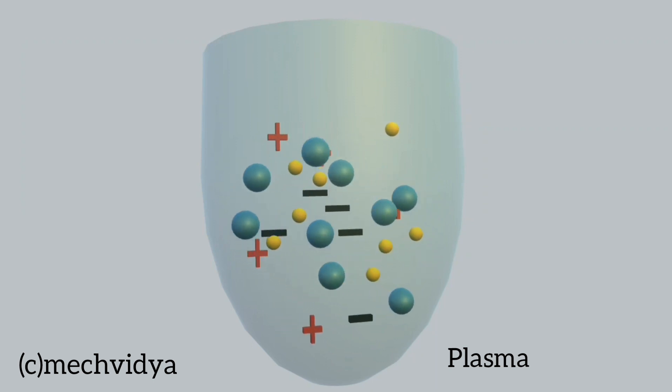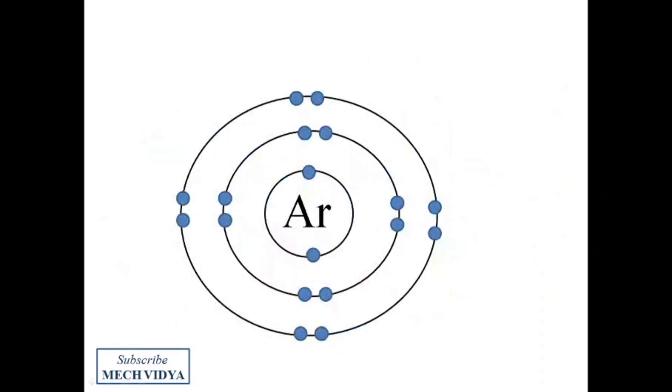On further heating, the atoms are broken down into positive and negative ions known as plasma. Now let us go deep inside the atomic structure to understand the formation of plasma.